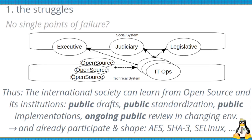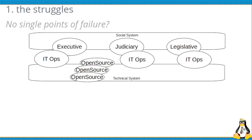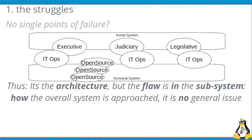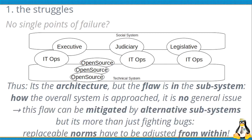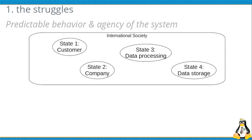Once again, the graphics here is just an illustration of the multiple possibilities for creating distribution — not just among different agencies but also within a single agency. The architectural flaw I see is in a subsystem, not a general issue. We can mitigate it by alternative subsystems, but it's more than just fighting bugs. It means replaceable norms from within — how the system approaches its own challenges.